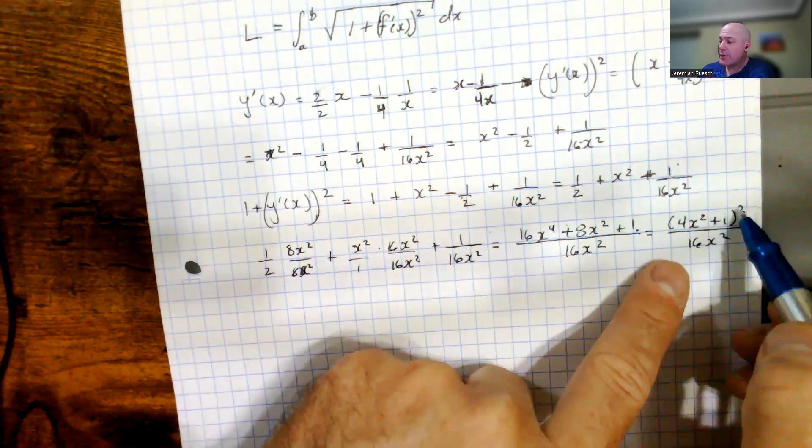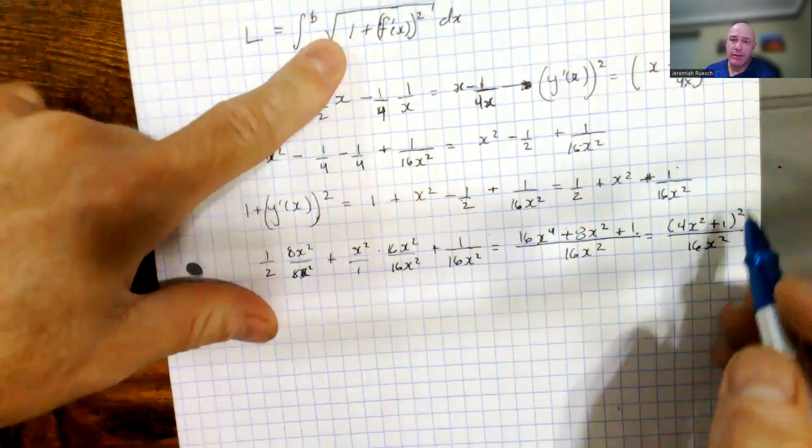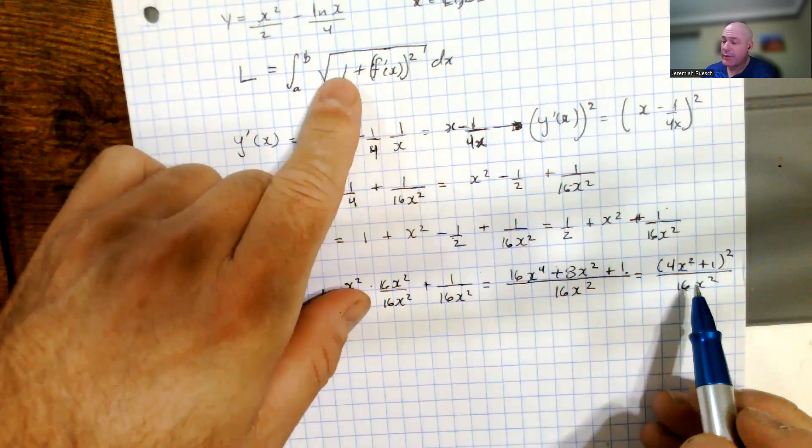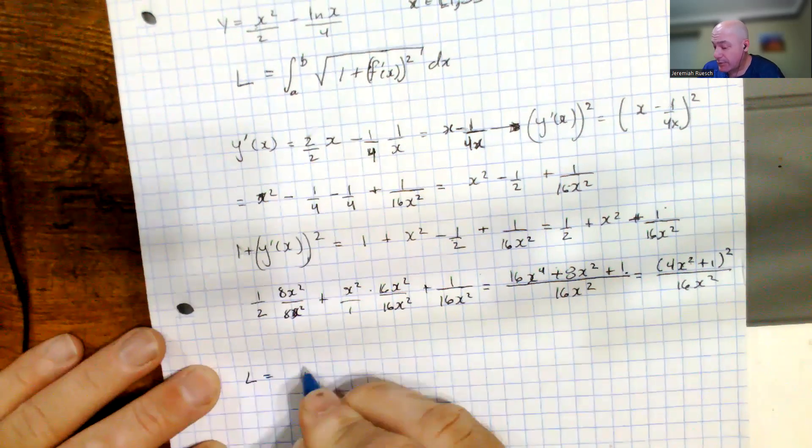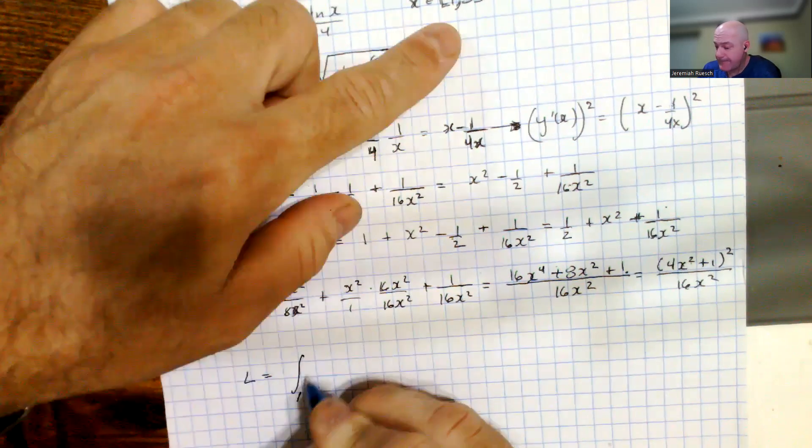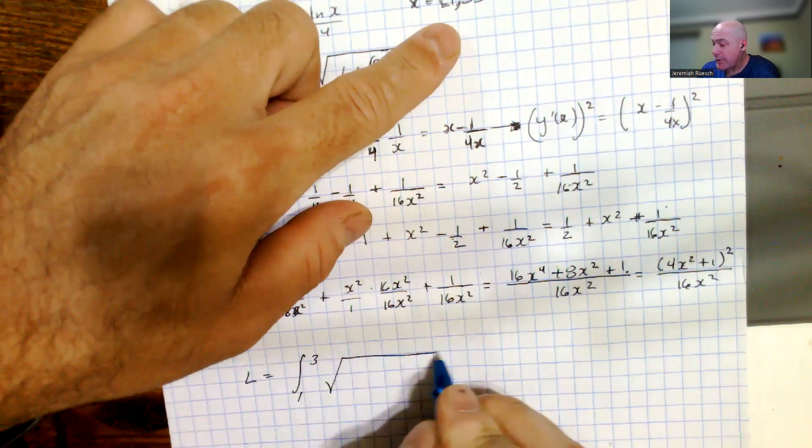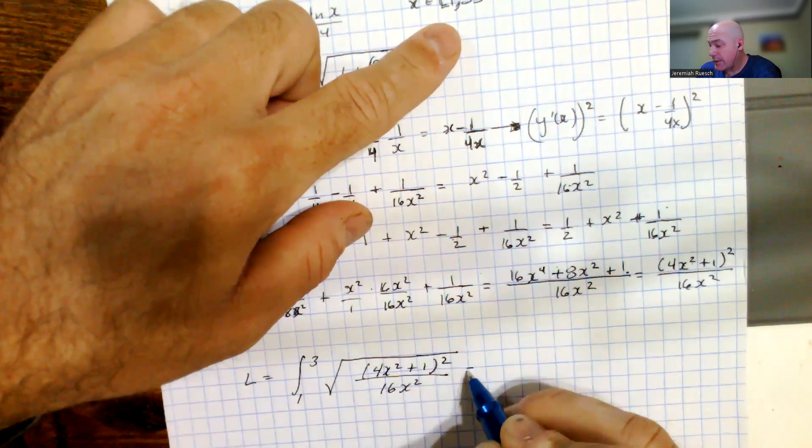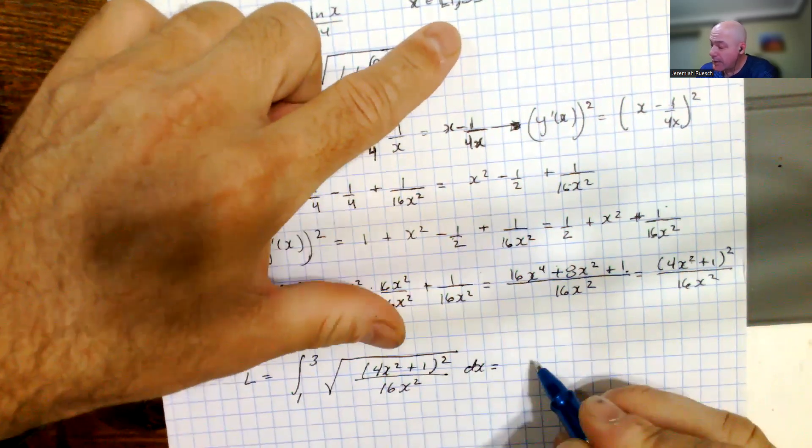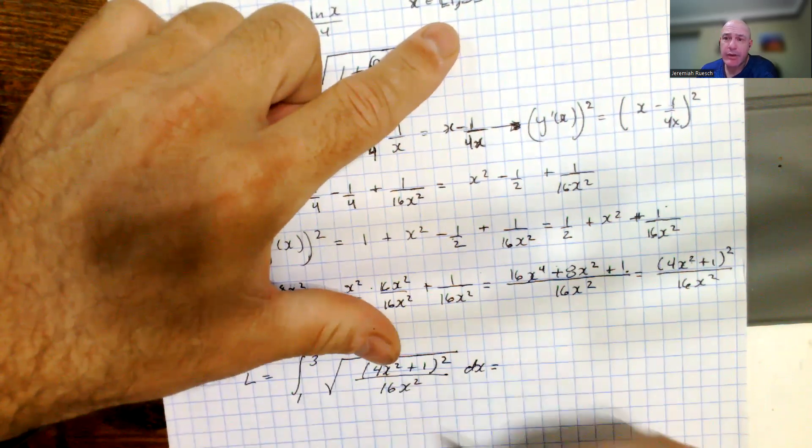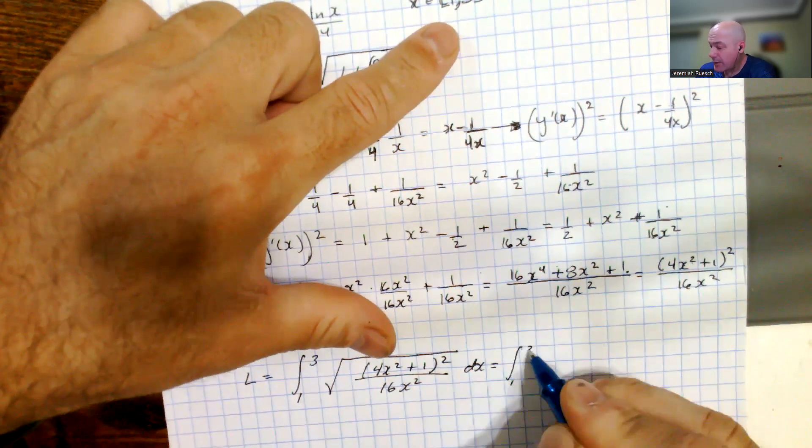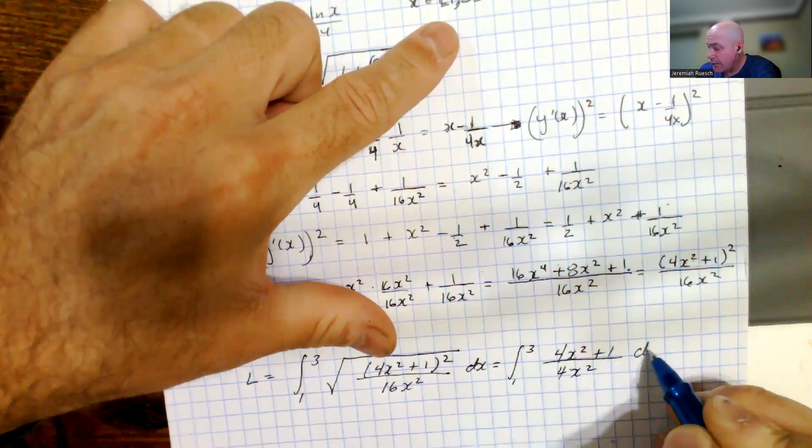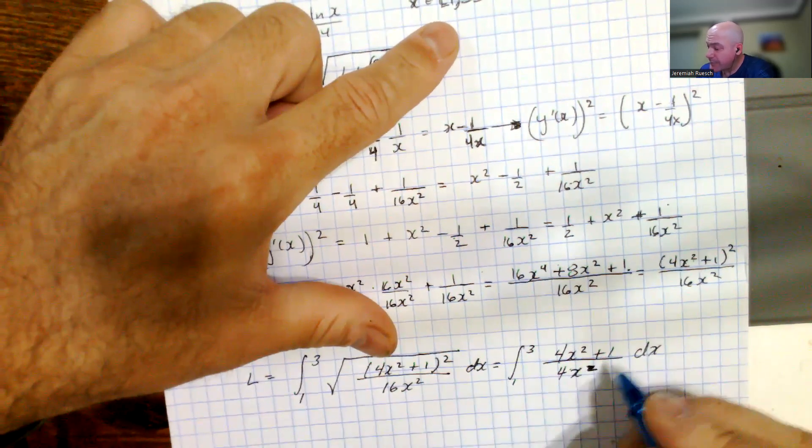And so this is a really nice form because the square, we have two perfect squares here, and so now that we have, going back up to our integral here, we're going to take the square root of this, and since we did both perfect squares, the square root and the square will cancel each other out, and so the length then is equal to the integral from, going back up to our original problem, was 1 to 3, so the limits of integration. And so we have a square root of 4x squared plus 1 quantity squared over 16x squared dx, canceling out the square roots, and assuming on the interval from 1 to 3 these are all positive, so we don't really need to worry about the absolute value.